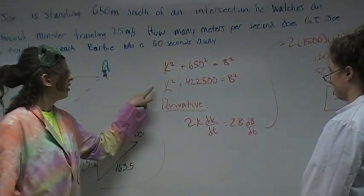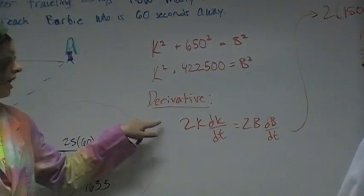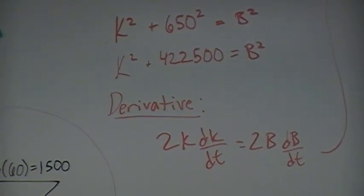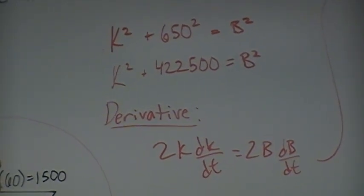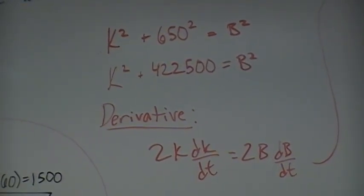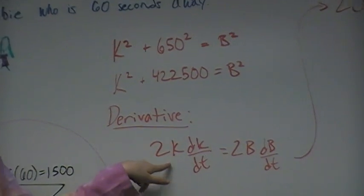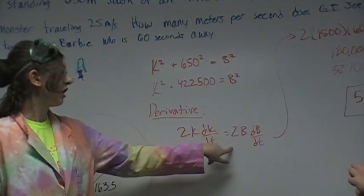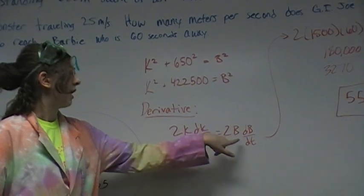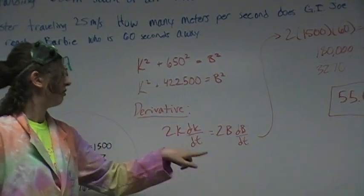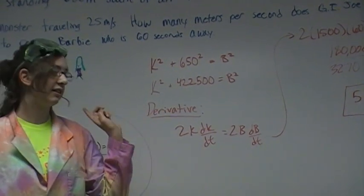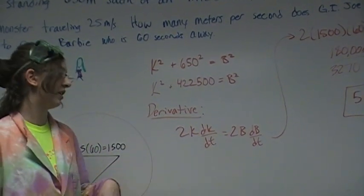Using that, we took the derivative. And we had to use implicit differentiation, not just your normal solving for derivatives. So it would be 2K times DK over DT equals 2B times DB over DT. Remember, this is a constant, so that equals 0. So that gets canceled out of our original equation when we do the derivative.